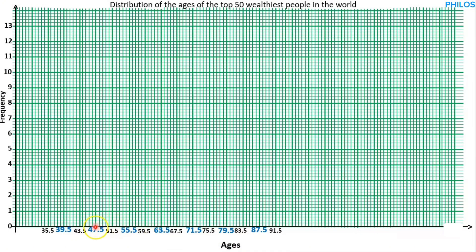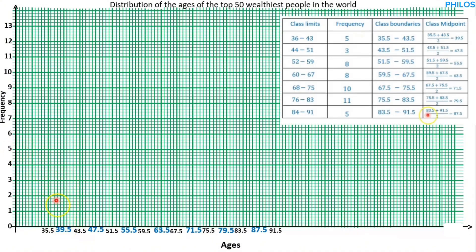The first class has a midpoint of 39.5. The frequency of that class is 5, so we trace from 39.5 up to 5 and put a dot there. Then the next one: midpoint 47.5, frequency 3 — we put a dot there. Then the next one: midpoint 55.5, frequency 8 — we trace it up and put a dot there. Then the next class: midpoint 63.5, frequency 8 — we chase this midpoint up to frequency 8 and put a point there.